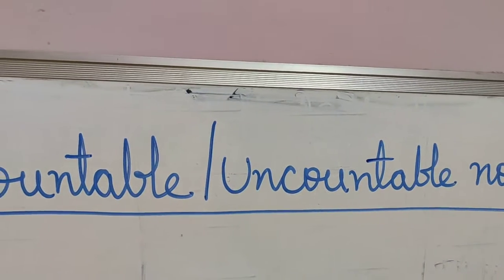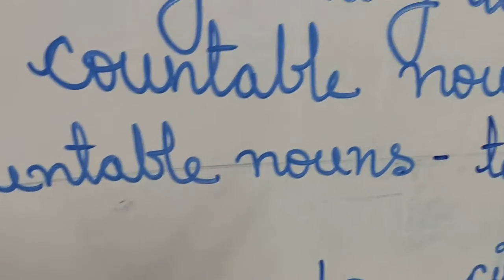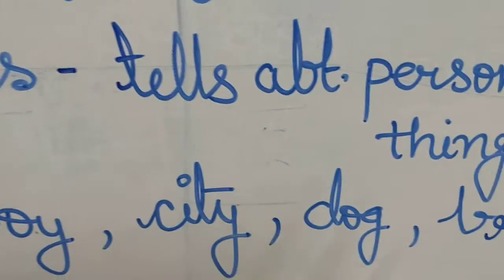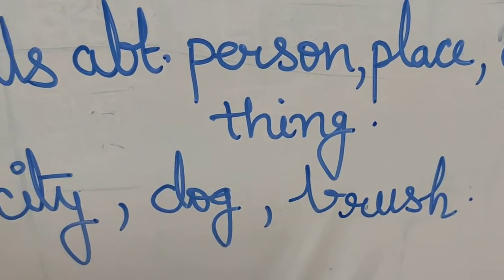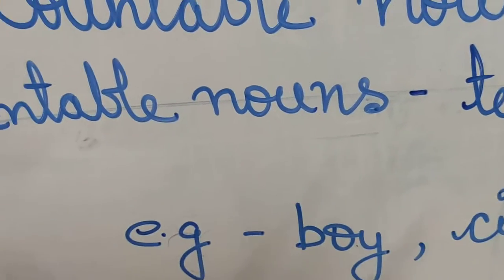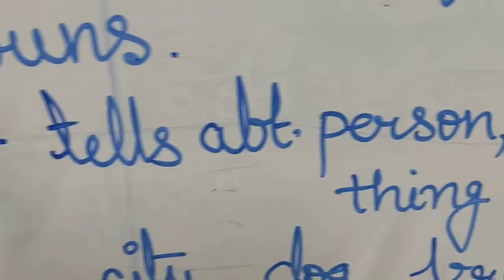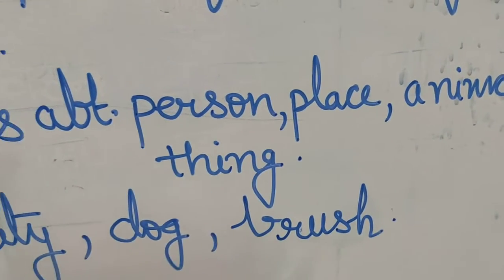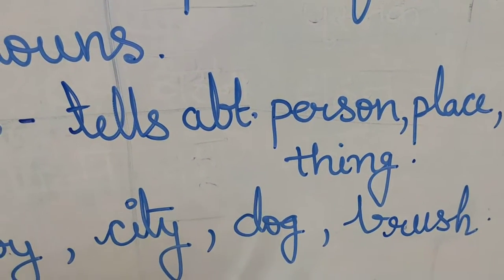Let's start with examples. The examples of countable nouns are boy, city, dog, brush. And I would like to tell you countable nouns tell us about a person, place, animal, or thing. It is again related to your previous knowledge of nouns.